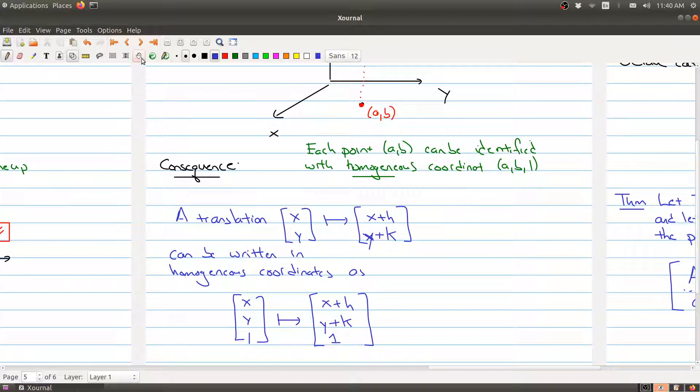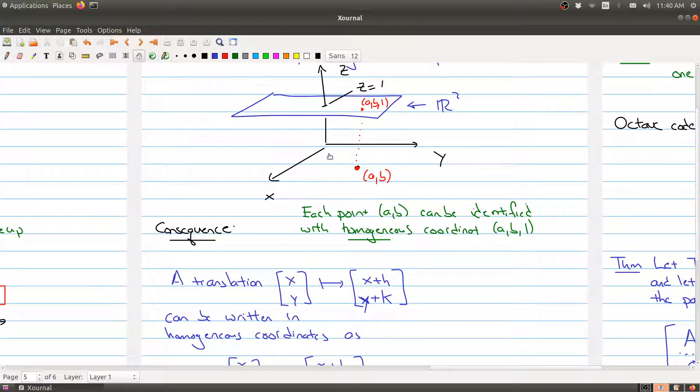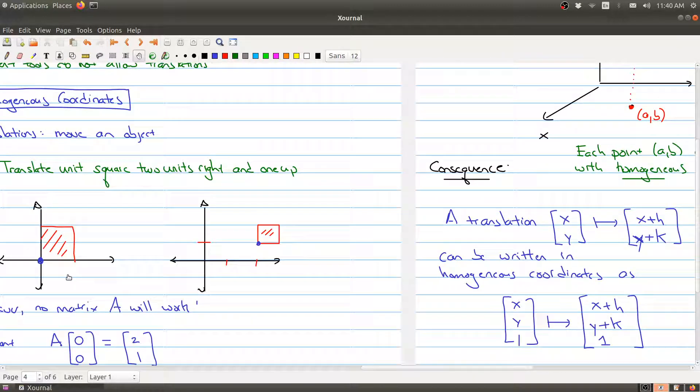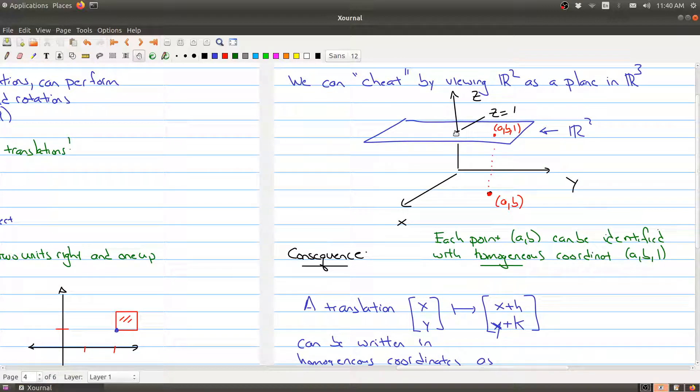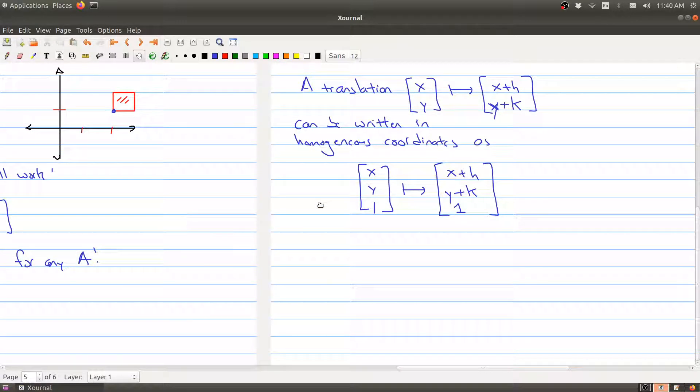Okay, and believe it or not this will help us get around the problem. By taking the square that would have been down here, bumping it up here, we no longer have that corner trapped at (0,0). Now it's at (0,0,1) and we'll be able to push it around on top of this plane.